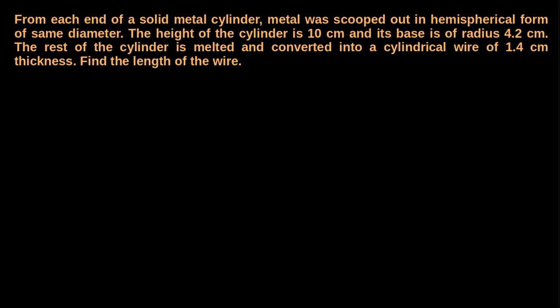In this video, we are going to learn about the application problems on combination of solids. The example problem we are discussing here is as follows: from each end of a solid metal cylinder, metal was scooped out in hemispherical form of same diameter. The height of the cylinder is 10 cm and its base is 4.2 cm. The rest of the cylinder is melted and converted into a cylindrical wire of 1.4 cm thickness. Find the length of the wire.